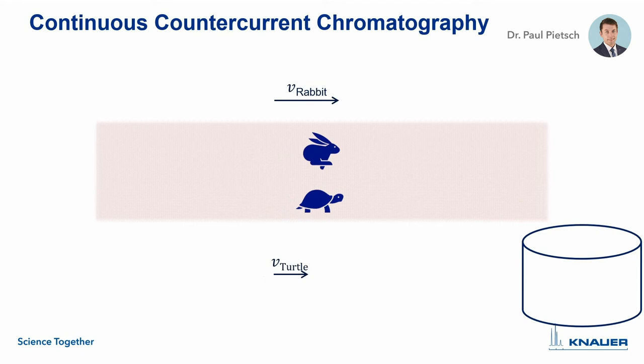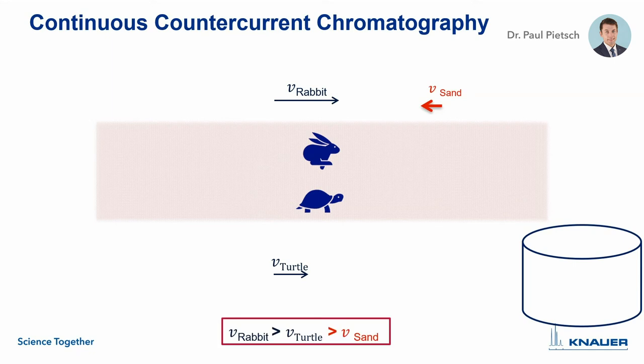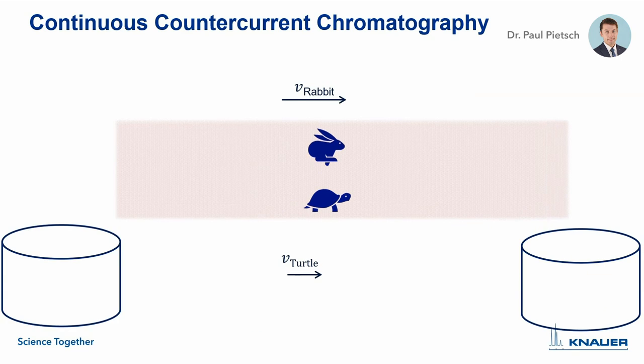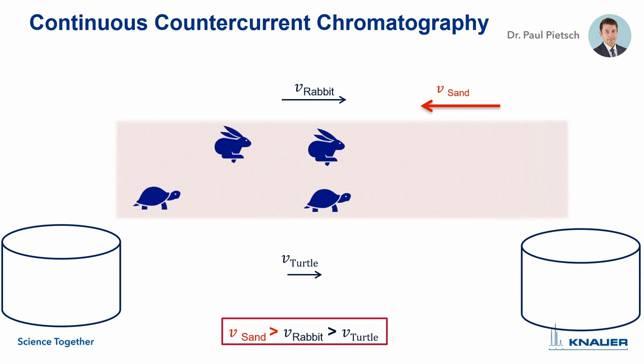The next step is continuous counter-current chromatography. We have the same conditions, but the only difference is that the ground is moving in the counter-current direction. If the velocity of the ground is smaller than the velocity of the rabbit and the turtle, both will be retarded but the result is the same — the rabbit reaches the right-hand side before the turtle. We can also increase the velocity of the sand so that it moves faster than both animals, and both will reach the left-hand side — the turtle first, followed by the rabbit.